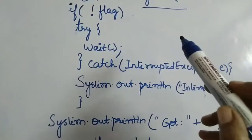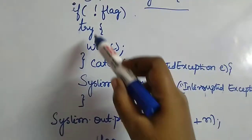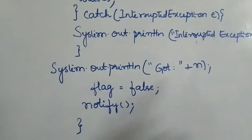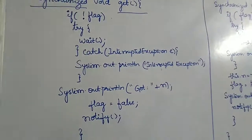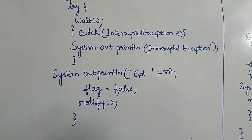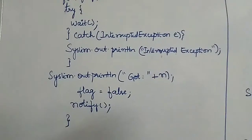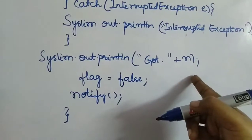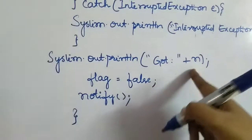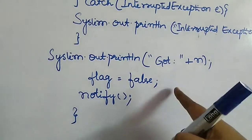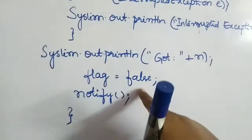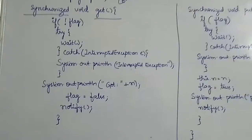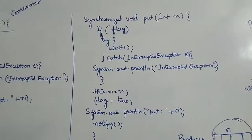Once the producer produces data, the flag value changes and the consumer thread receives a notification. The consumer prints 'got n' showing the value received. After receiving the data, the consumer thread sets the flag back to false and calls notify to tell the producer it has finished consuming. That is the complete consumer code.